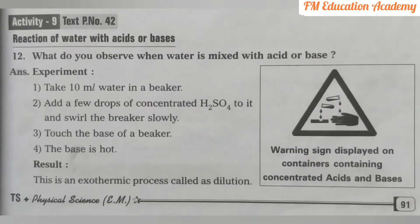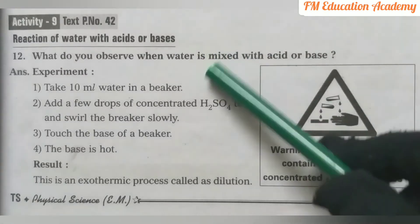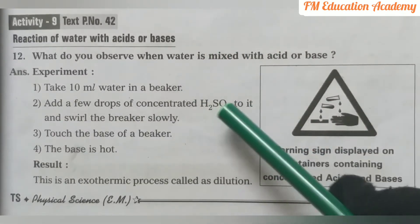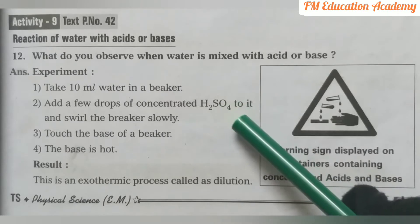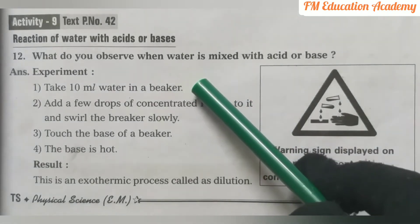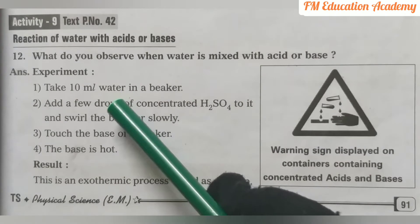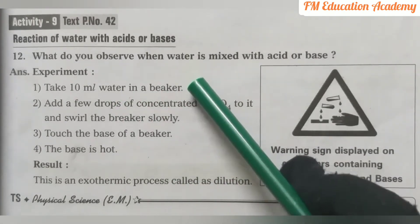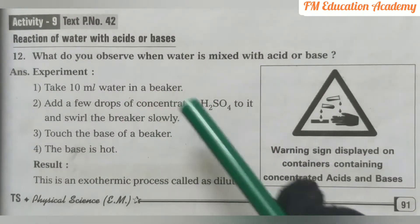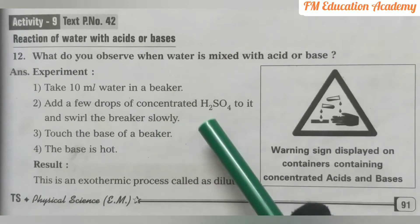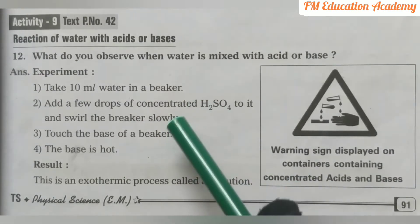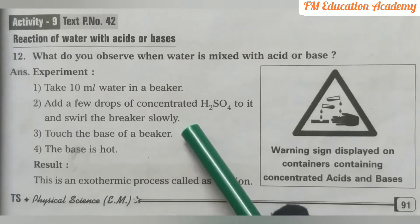The procedure is: we are taking about 10 ml of water in a beaker, and then we are adding just a few drops of concentrated sulfuric acid to the beaker. Then we slowly mix the beaker. After some time, we can observe that the base of the beaker has become hot.